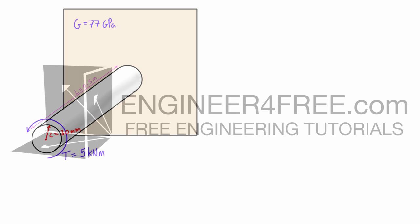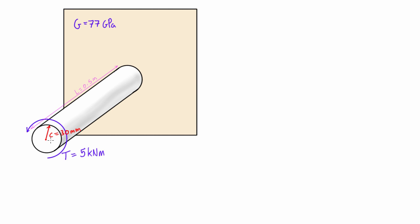Welcome back. In this video I want to start talking about shearing strain. Shearing strain can be represented with this expression where, for any cross-section we want to consider inside a member under torsion, rho is our radial distance out from the axis of the shaft. We don't necessarily have to go all the way to the outer surface — if we do, we call that c — but rho can be any fraction of that. We also have the angle of twist in radians, divided by the length to the cross-section we're looking at, giving us shearing strain gamma in units of radians.